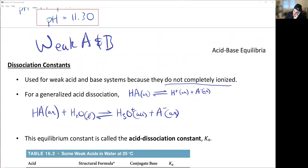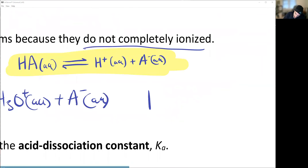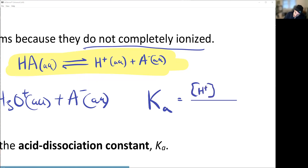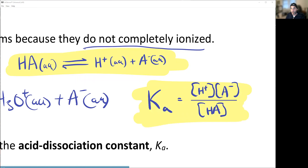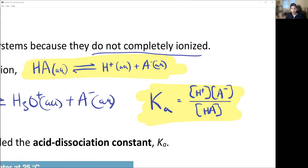But we usually use the simplified version because we ignore the addition of water — we can't do that with bases, and you'll see why. If you write the Ka for the highlighted reaction, we call it Ka — the acid dissociation constant. Ka, A for acid, is equal to concentration of products over reactants: [H⁺][A⁻] / [HA]. That's the Ka.